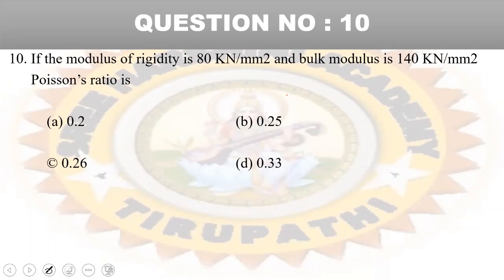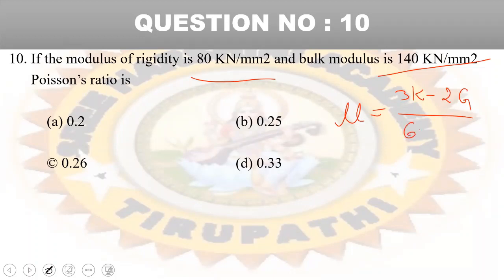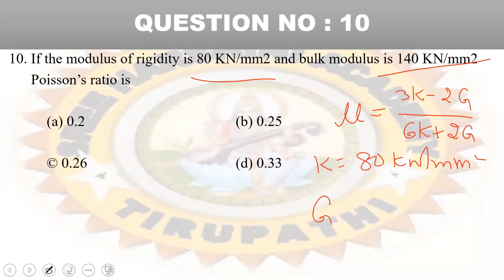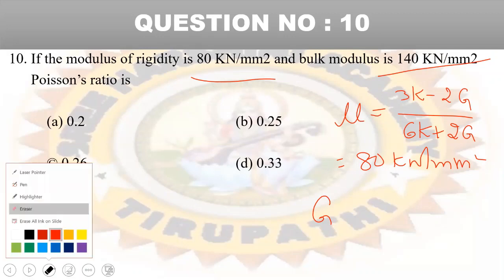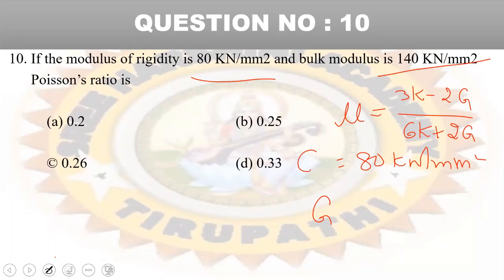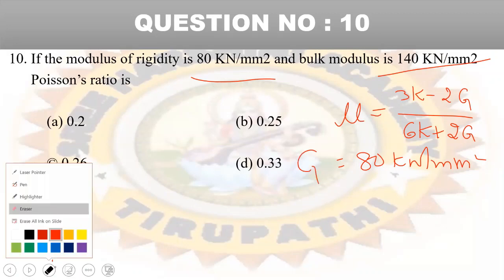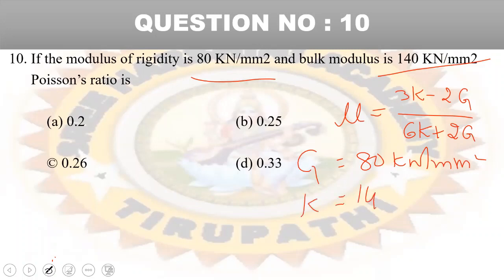Next question: modulus of rigidity G is 80 kN per mm² and bulk modulus K is 140 kN per mm². Find the Poisson's ratio. Using the formula mu equals (3K minus 2G) divided by (6K plus 2G), substituting G equals 80 and K equals 140, the answer is mu equals 0.26.